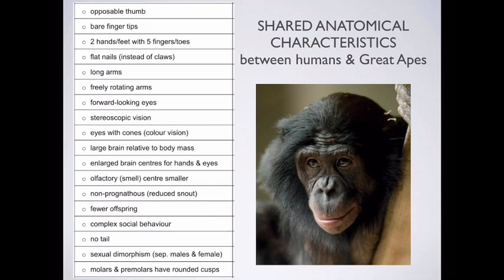Our sense of smell is not that great. Certainly if you think about other species — dogs, for example — their primary sense is smell. Our primary sense is vision. So our sense of smell is greatly reduced, and therefore the centre in the brain responsible for interpreting that is also significantly reduced.